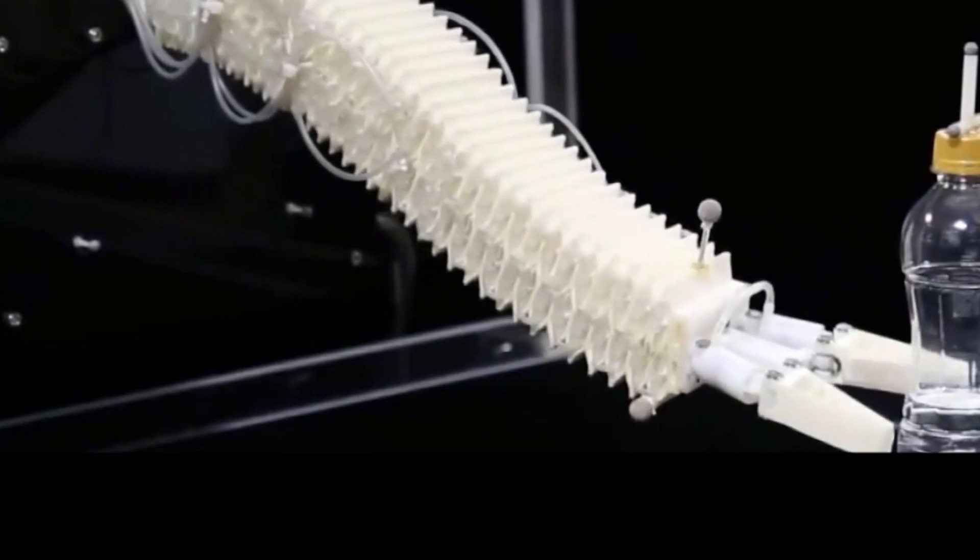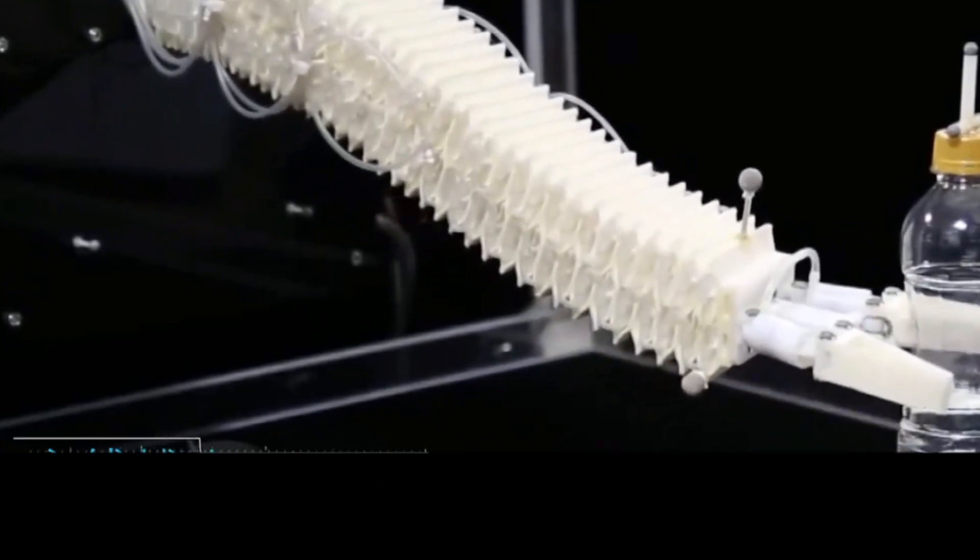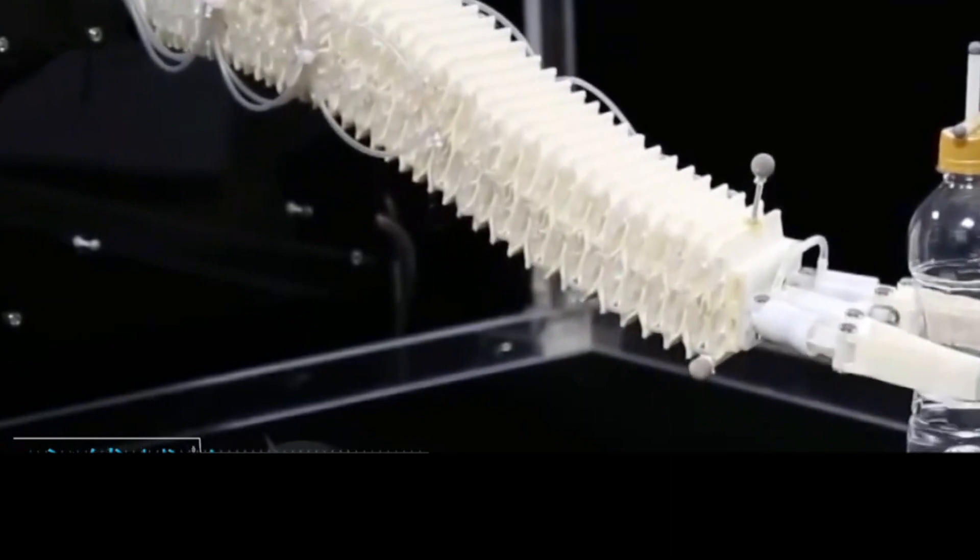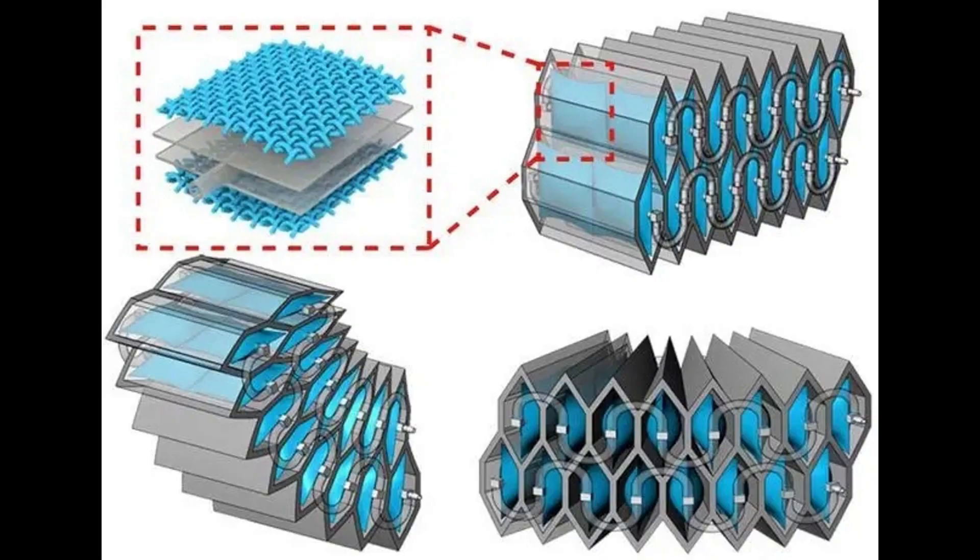In the study, the team proposed a honeycomb pneumatic network structure and developed a soft arm based on this structure that resembles an elephant trunk, with both flexibility and high load capacity. The arm's self-weight under load has reached 1 to 3 kg load, 3 kg self-weight.